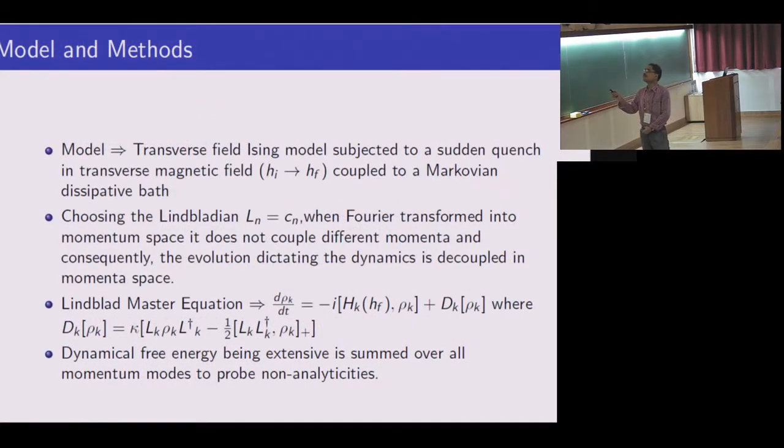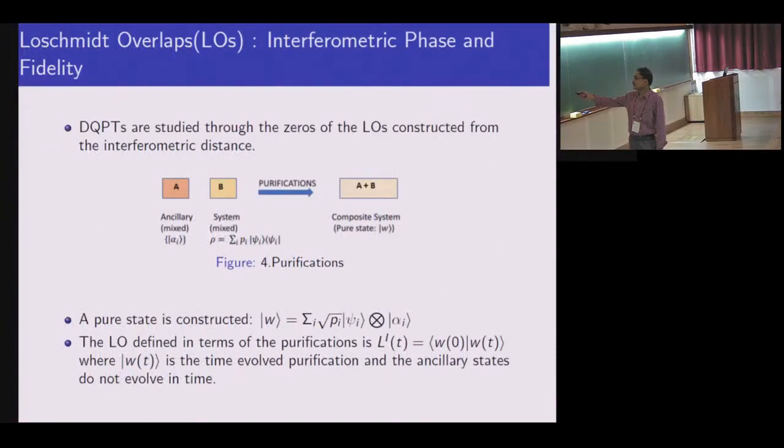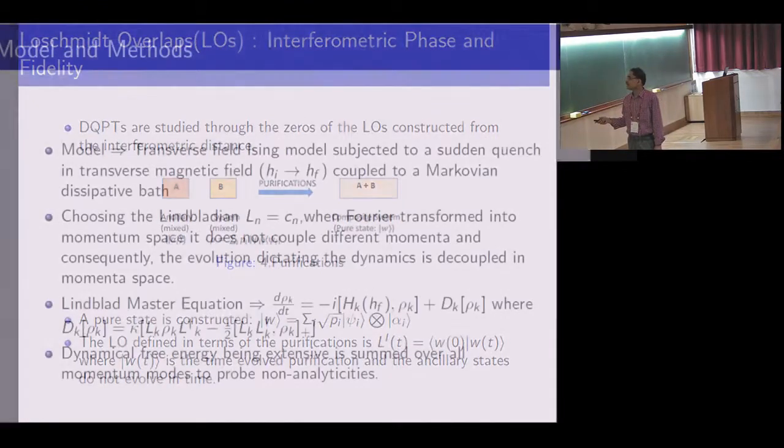The model is again the transverse Ising model at finite temperature as an open quantum system. You quench from Hi to Hf and I choose a Lindblad-Markovian operator. This is also a problem: we choose it in such a way it is local in Jordan-Wigner Fermions so I can write the Lindblad-Master equation within the Markovian approximation. Within the Markovian approximation, we solve this density matrix. Fortunately for this model, for this type of dissipator, we can do everything exactly analytically—find the density matrix and the measure I've defined in terms of purifications.